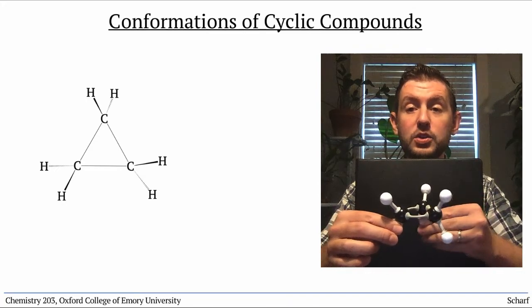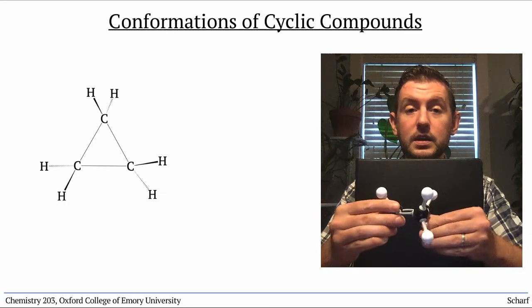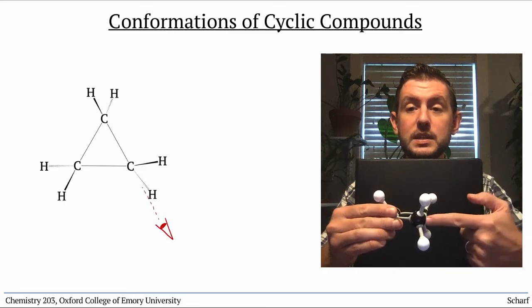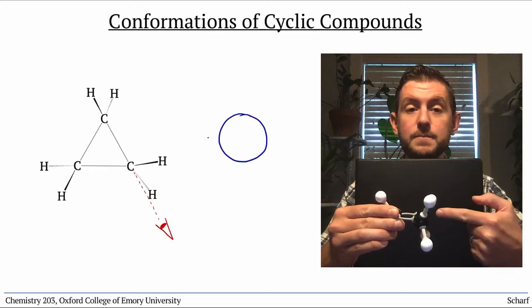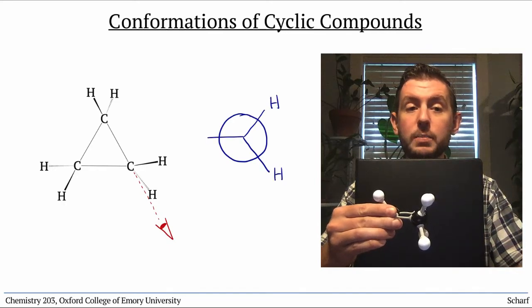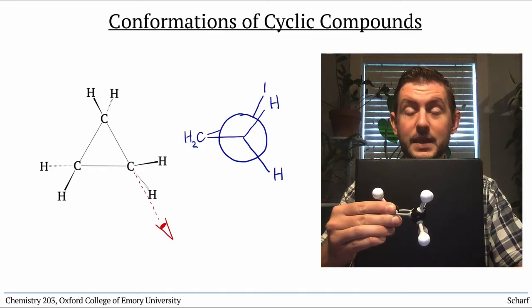If we draw a Newman projection along one of the CC bonds in a cyclopropane, we can see that all of the bonds are eclipsed. That's not very stable.